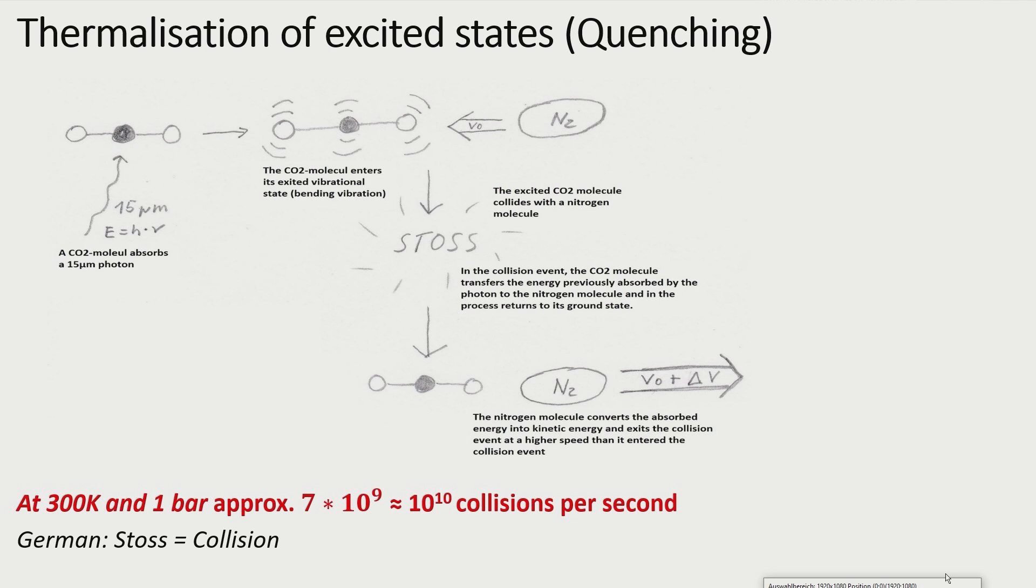If a CO2 molecule in its excited state collides with a gas molecule, its vibrational energy can be transferred to the colliding gas molecule. After this collision, the CO2 molecule has returned to its ground state. It now can absorb a suitable photon again.